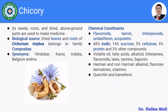Chicory — its seeds, roots, and dried parts are used to make medicine. It is obtained from the dried leaves and roots of Cichorium intybus, belonging to family Compositae. The synonyms for Chicory are Hindubar, Shkansi, Indibar, and Belgium intybus.